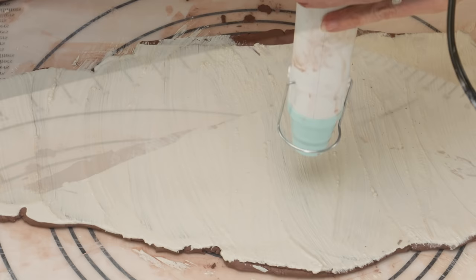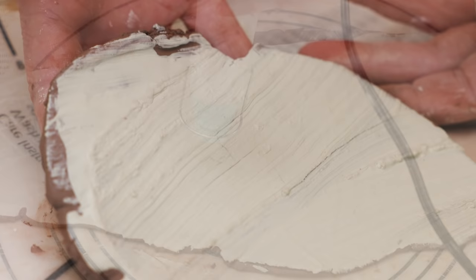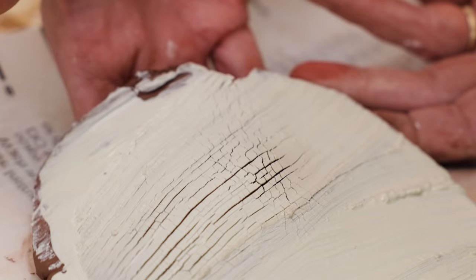Again I dried out the slip. I tested to see if it was ready by putting my fingers under the clay to make sure the slip was dry enough but the clay was still flexible. Then I tossed the slab around like this.